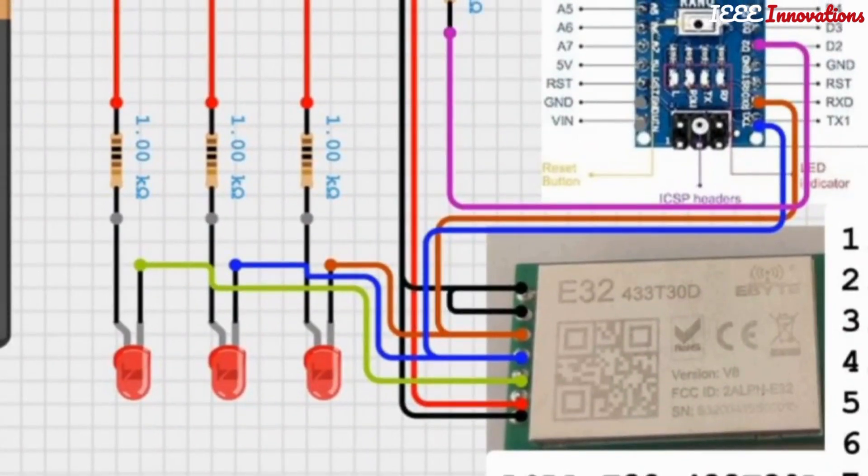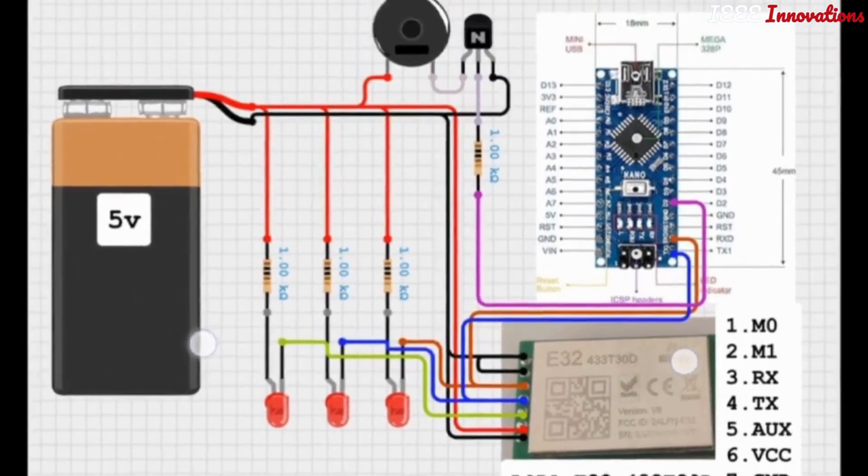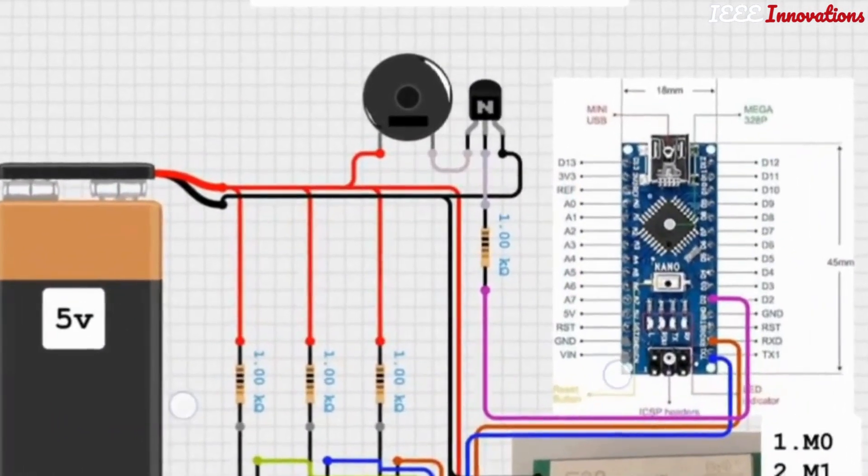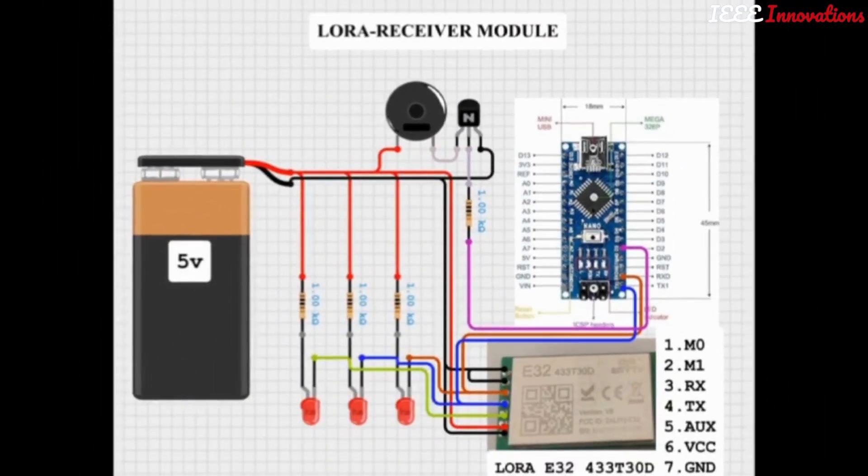The third pin from top, you can match here. Again, same circuit. There is no difference in RX and TX circuits. Here we added an extra buzzer to indicate whenever data is received. This is our receiver module.